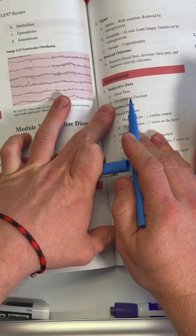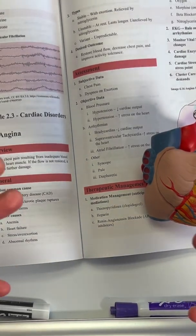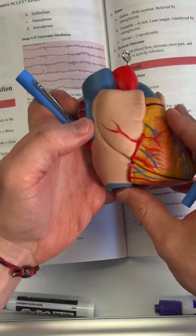With angina, you're going to see chest pain and generally this chest pain is going to be relieved by rest. You're also going to see dyspnea on exertion. Remember, they're not getting oxygen-rich blood to their heart. Because of what's going on with the heart, you're also going to see changes in blood pressure and arrhythmias.